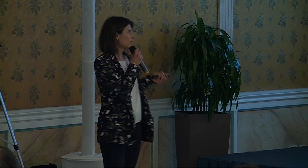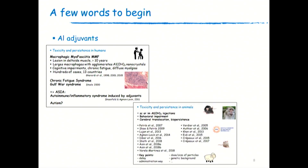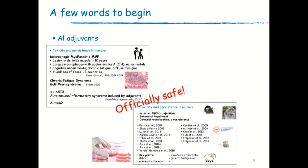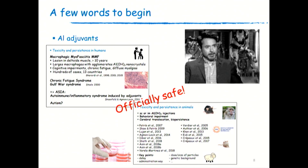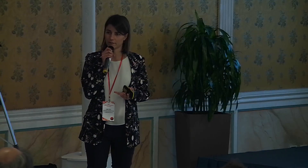To sum up: we have data showing persistence and hypothetical toxicity in humans, data from animal studies showing persistence and toxicity, and data from in vitro studies. But don't worry — aluminum adjuvants are officially safe. As a scientist and also as a mother, I don't understand these two opposite things. Because we have scientific data, yet the official position is that they are safe. So I just wanted to understand how they can be officially safe, and I'm going to try to explain what I know about that.